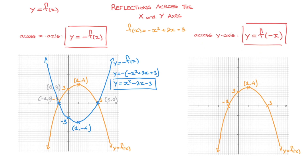The way this transformation works is by turning the x-coordinate of every single point on the curve of y equals f of x into its opposite. So for instance, this x-intercept whose coordinates are negative 1, 0 will turn into the point whose x-coordinate is the opposite of negative 1, which would be 1. That x-intercept ends up right here at 1. Looking at the y-intercept, its coordinates are 0, 3. This point will turn into the point whose x-coordinate is the opposite of 0, but since that's just 0, the y-intercept stays right where it is.